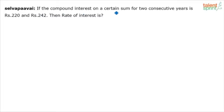If the compound interest on a certain sum for two consecutive years is ₹220 and ₹242, then the rate of interest is — well, it looks to be a complex one. If you start using the formula, it gets even more complex. But if you go by basic concept of percentages, then we can solve it really quickly.